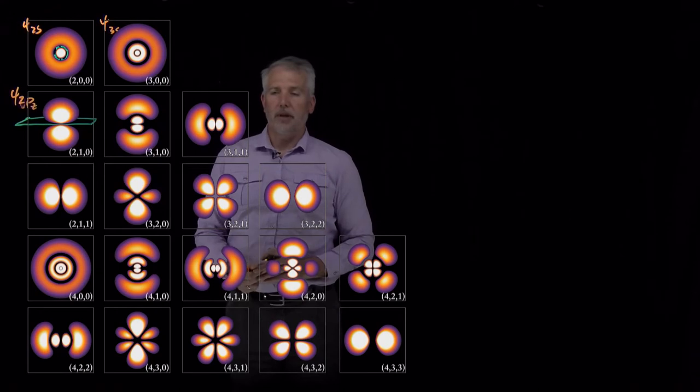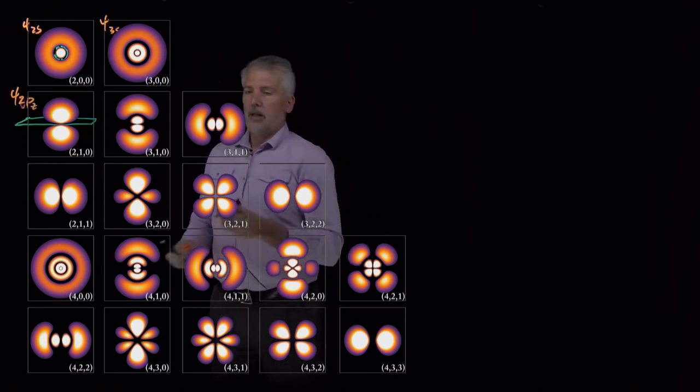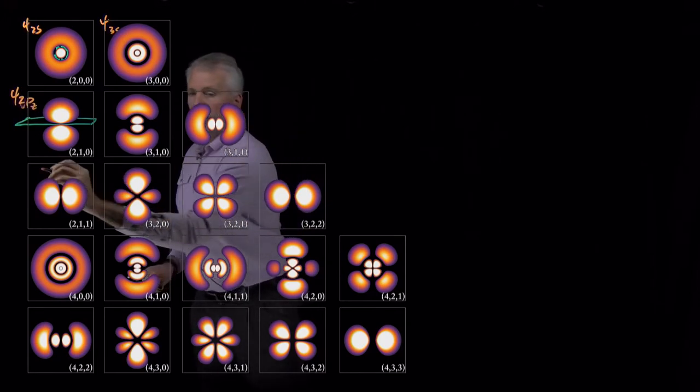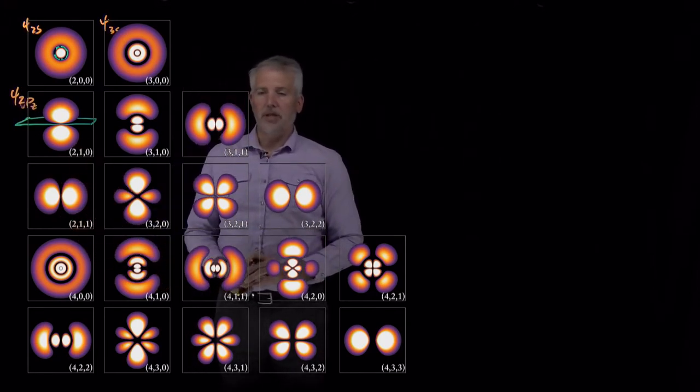And then the 2-1-1 orbital is just a different orientation of one of these p orbitals.